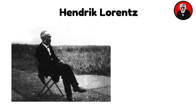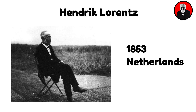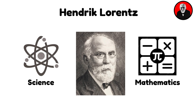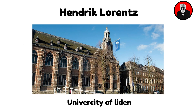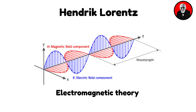Hendrik Lorentz was a Dutch physicist, renowned for his pioneering work in electromagnetism and theoretical physics. Born in 1853 Netherlands, Lorentz exhibited an early aptitude for mathematics and science. He pursued his studies at the University of Leiden, where he focused on physics and mathematics. Lorentz developed a comprehensive theory describing the relationship between electromagnetic fields and matter. His work provided a theoretical foundation for understanding how light and electromagnetic waves interact with charged particles.